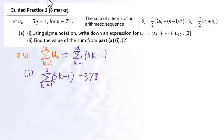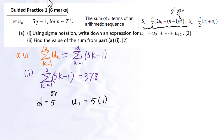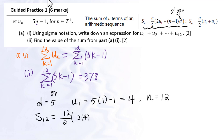Or we can use the arithmetic series formula. d is the slope for the linear function, so d equals 5. u sub 1 equals 5 times 1 minus 1, which equals 4. n equals 12. So we get the summation of the first 12 terms: 12 over 2, times 2 times 4, plus 12 minus 1, times d equals 5. The answer is 378.